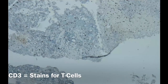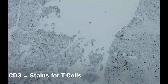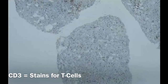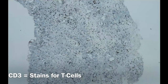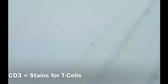This is the CD3 stain for T cells. We have some T cells scattered in between, but you can clearly see the difference between the B cells and the T cells. The B cells from CD20 and the T cells from CD3 show a big difference — the majority of cells are B cells. So we are dealing with a type of lymphoma with B cells.